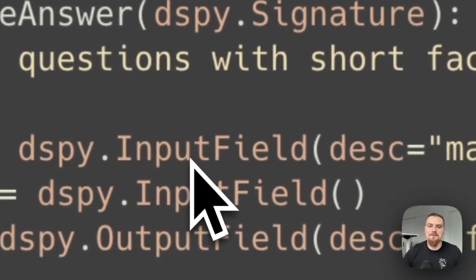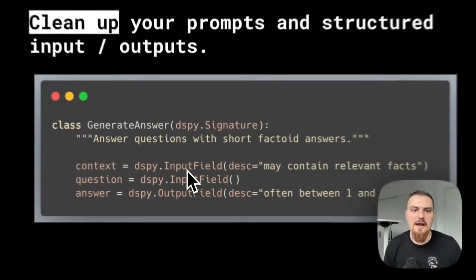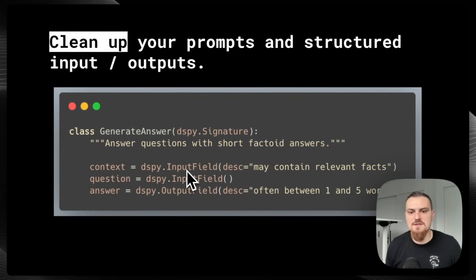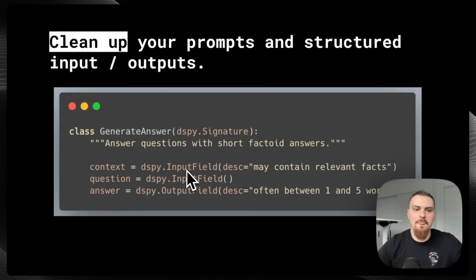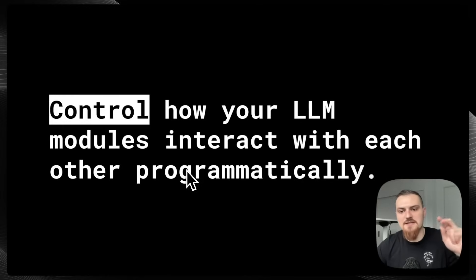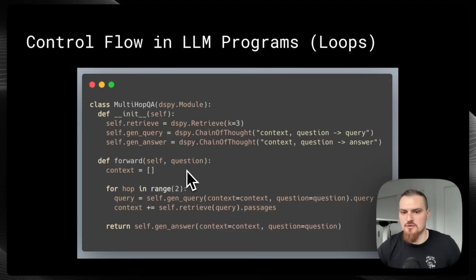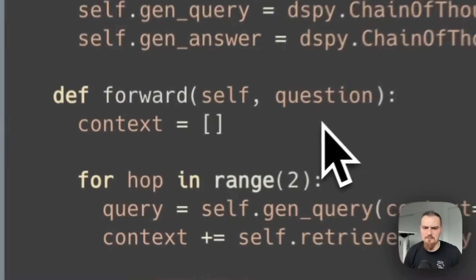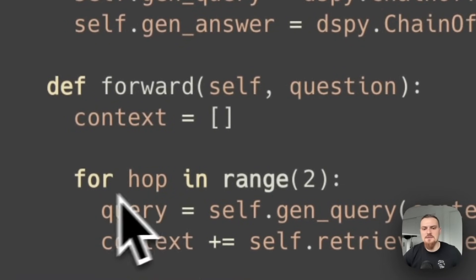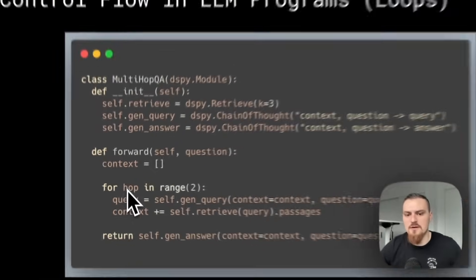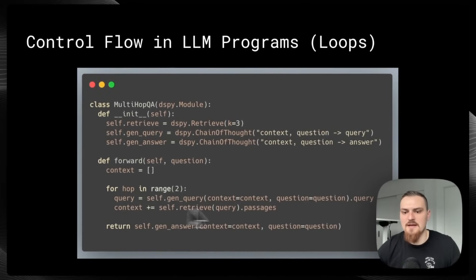You also have this way of defining the input and output field — one way to have a consistent syntax of the prompts and the structured outputs and what the variables do for all of the components in your LLM programs. The second super exciting thing is controlling how your LLM modules interact with each other programmatically. Starting off with control flow — if you want to have a loop in your LLM program, you can easily interface that in the forward pass with for/while loops, and you can also have if/else statements.